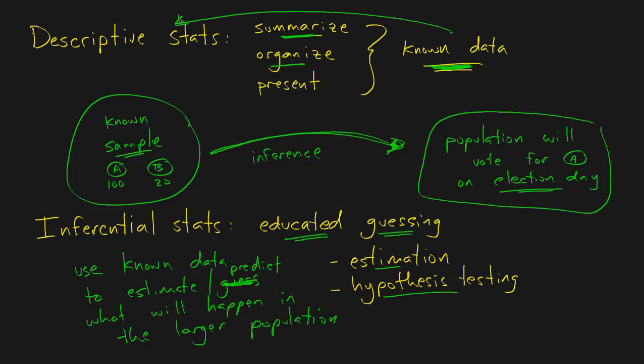So that's the difference between descriptive and inferential statistics. Descriptive simply presents known data. Inferential uses known data to make an estimation or prediction about what will happen in the larger population that we're not directly observing.